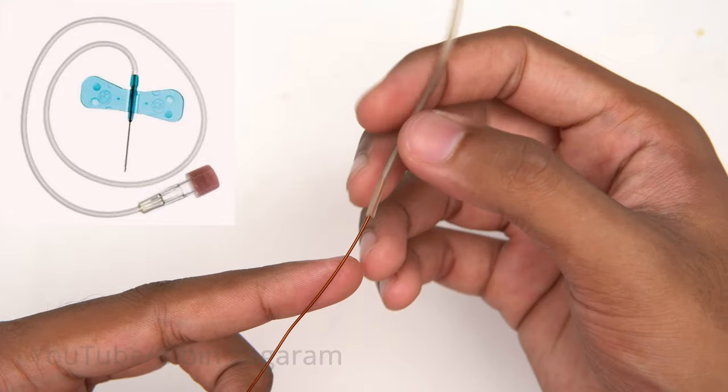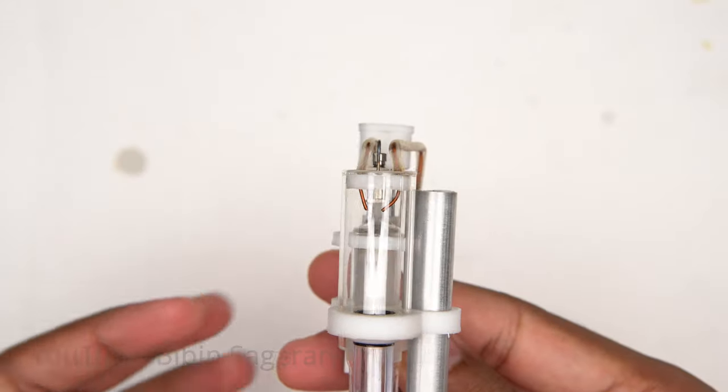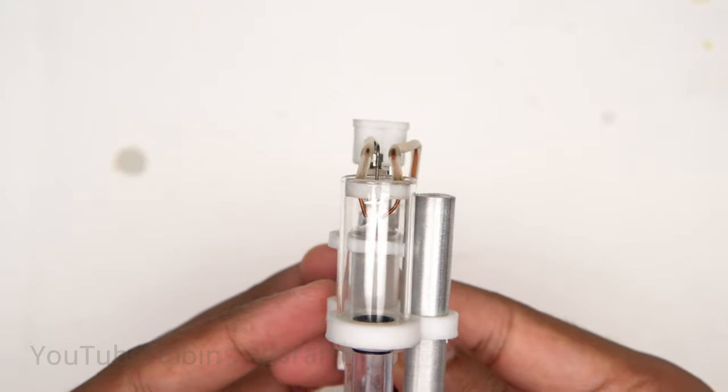So I used copper wire covered with thick tube as a conductor. These tubes are from a butterfly needle. Ends of the wires are connected to the terminals of the piezo igniter and spark gap of 5 mm is kept inside the combustion chamber.